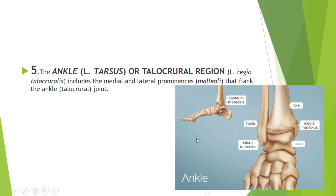The fifth region is the ankle, also called the talocrural region or by the Latin word 'tarsus.' The term talocrural combines 'crural' meaning leg, and 'talo' from the bone talus. The talocrural region includes the medial malleolus of the tibia and the lateral malleolus of the fibula, and flanks the ankle joint — also called the talocrural joint — because it is formed between the leg bones and the talus bone of the foot.